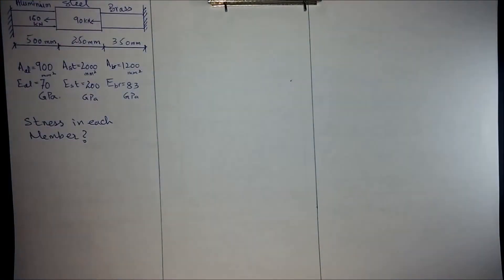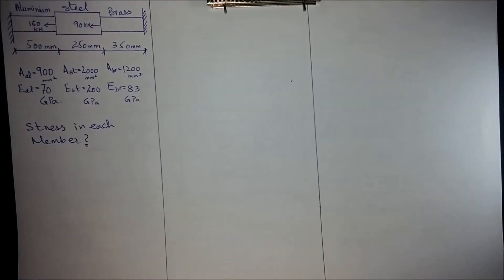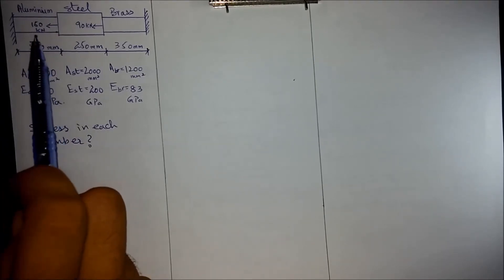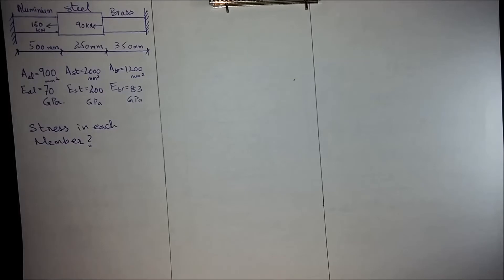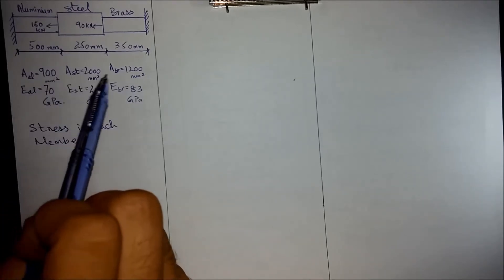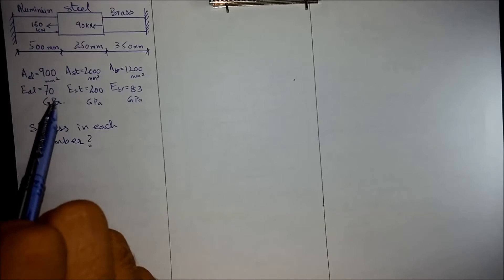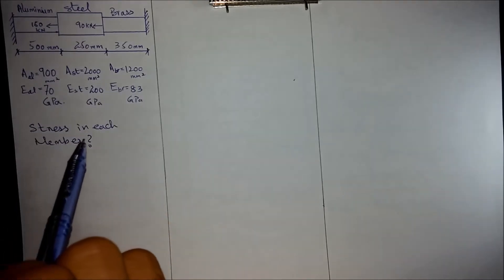In this problem we are required to find out the stress in each member. We are given an indeterminate structure consisting of three bars: the first bar is aluminium, the second is steel, and the third is brass. The area of aluminium, steel, and brass are given, and the modulus of elasticity of each member is also given.